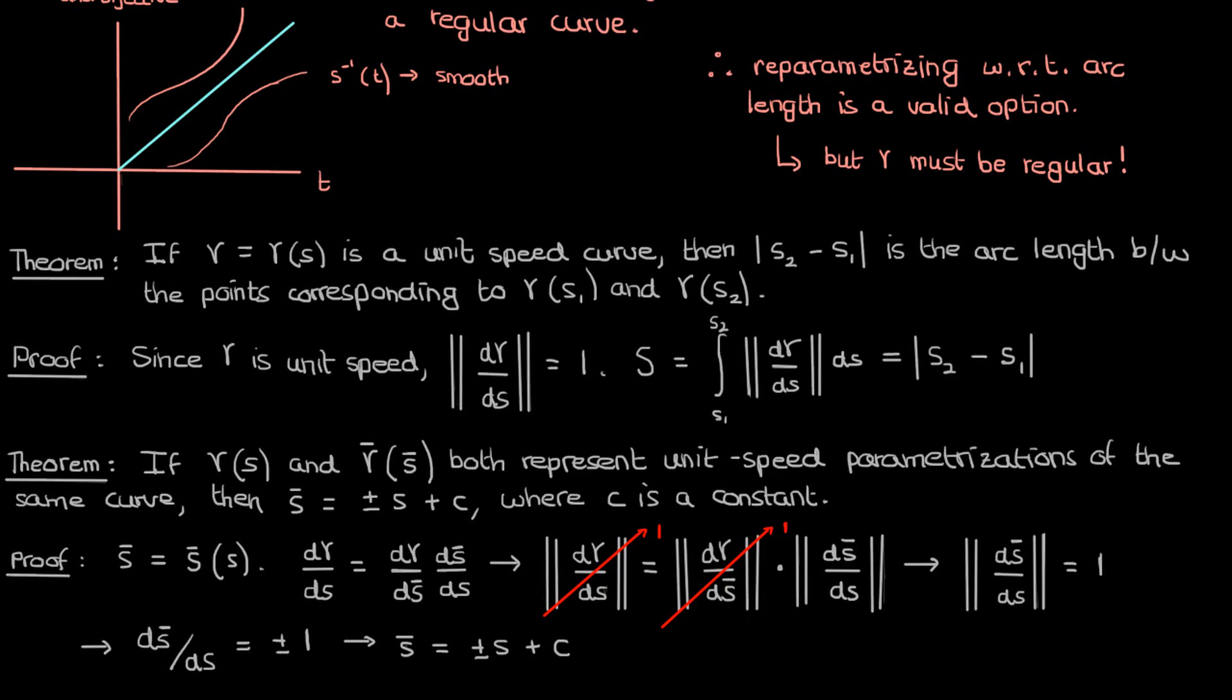Together, these two theorems we've proved tell us the value of reparametrizing with respect to arc length. If we reparametrize a regular curve with respect to arc length, we basically get a unit speed curve after carrying out the reparametrization process, according to our first theorem. Then according to our second theorem, any other unit speed curve reparametrization would then still involve the arc length as the parameter, but that arc length would just be displaced by some constant relative to the arc length in the original parametrization.